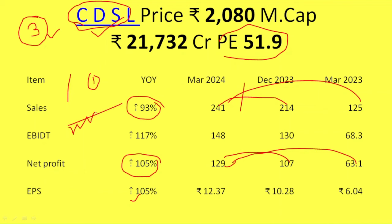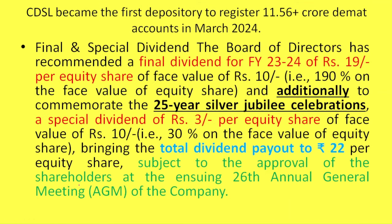If you look at the chart, the chart is positive and the result is positive. The stock will run up. CDSL is the first depository with a demat account since March 2004. In April, the result was positive and the stock was a rocket.